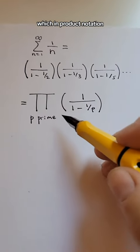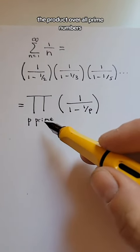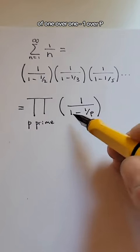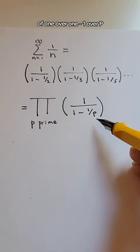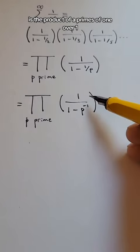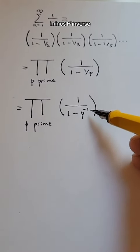Which in product notation is like this, the product over all prime numbers of 1 over 1 minus 1 over p. Or if you prefer, it's the product over primes of 1 over 1 minus p inverse.